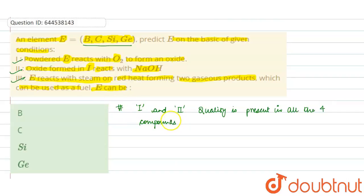And here see, only third quality is only present in carbon.